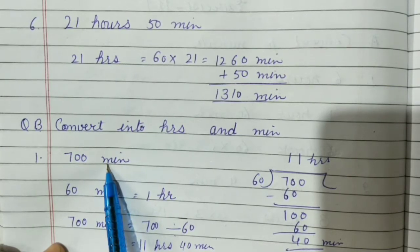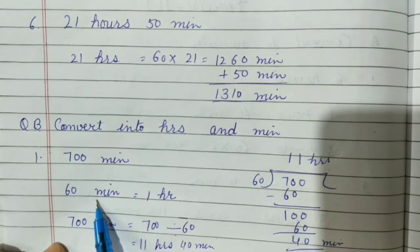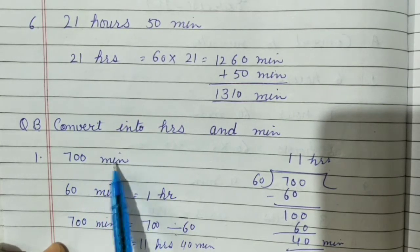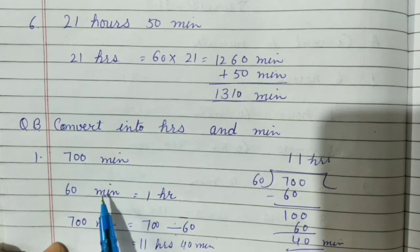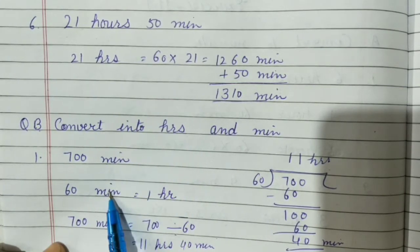So in this question, what will we do? We will divide 700 by 60. Why are we not multiplying by 60? Why are we dividing? Because minutes are more. But if we convert minutes to hours, they will be less. So that's why we are dividing by 60.